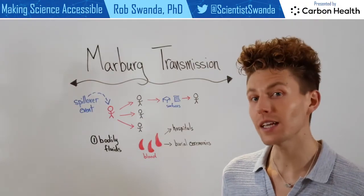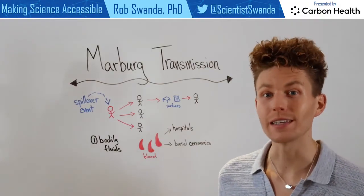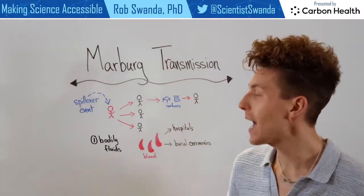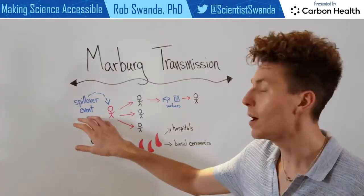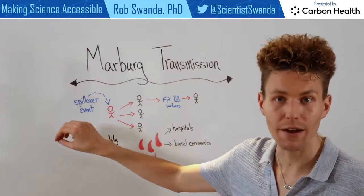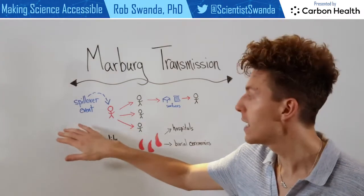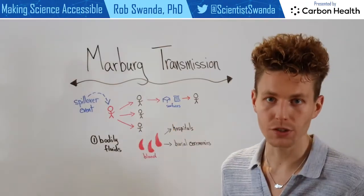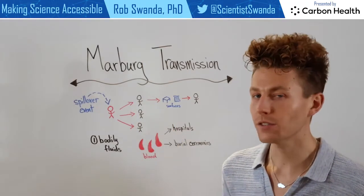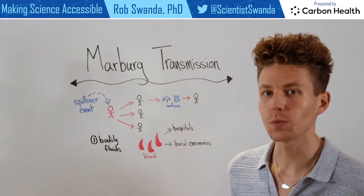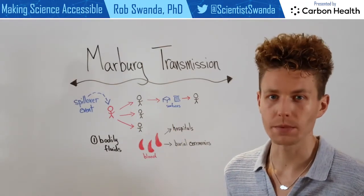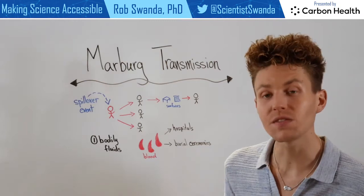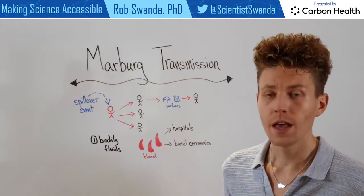The first thing that needs to occur is a spillover event. This happens from the infected population — the African fruit bat — into the human population. This typically occurs when an individual comes in contact with an infected bat's feces or urine.